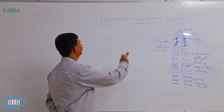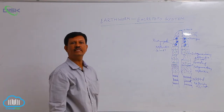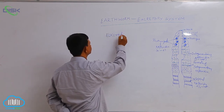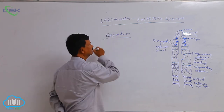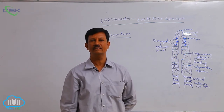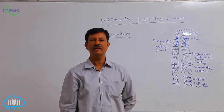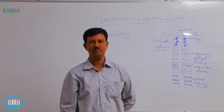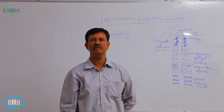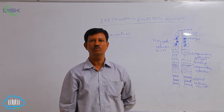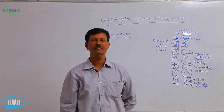Excretory system of earthworm. What is excretion? Removal of the nitrogenous waste material from the body is known as excretion. In animals, there are different types of metabolic activities that take place. The end products are nitrogenous waste materials. In animals, there are three types of nitrogenous waste materials that are formed: ammonia, urea, and uric acid.